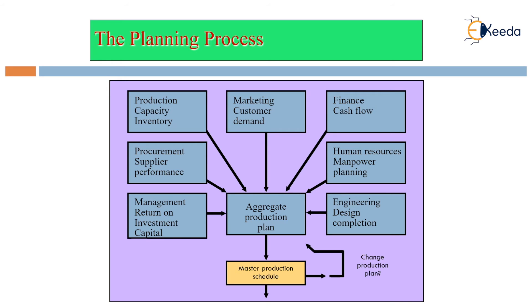If there is any change in the master production plan, it goes back into the aggregate production plan, and the final decision comes out as the master production schedule.